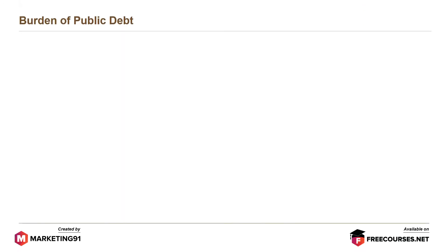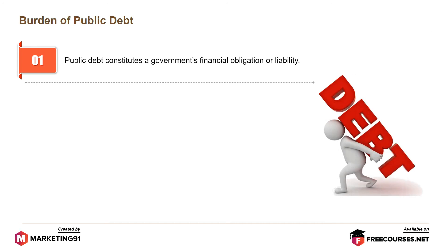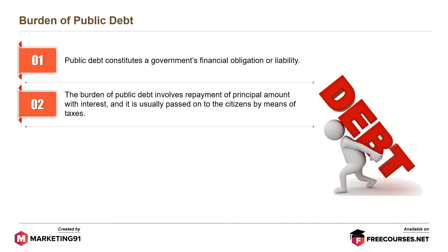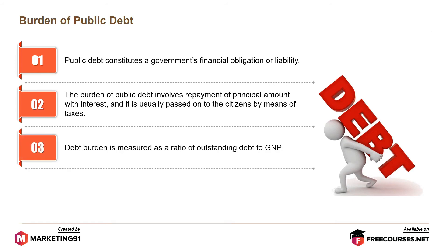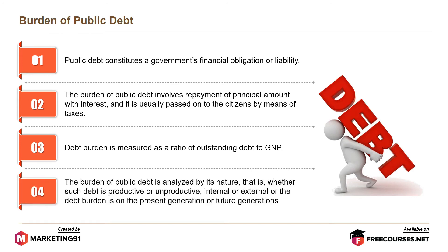Public debt constitutes a government's financial obligation or liability. The burden of public debt involves repayment of the principal amount with interest, and it is usually passed on to citizens by means of taxes. Debt burden is measured as a ratio of outstanding debt to GNP. The burden of public debt is analysed by its nature — whether such debt is productive or unproductive, internal or external — or whether the debt burden falls on the present generation or future generations.